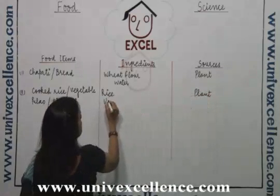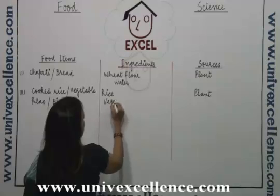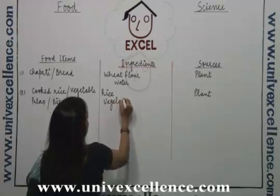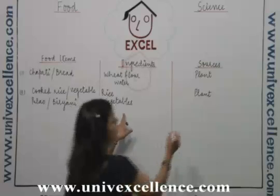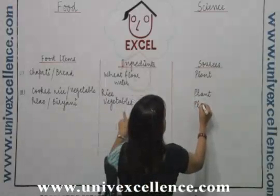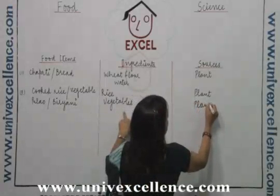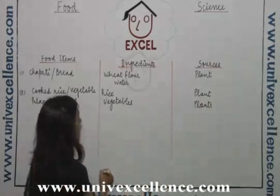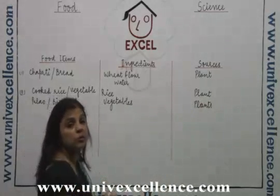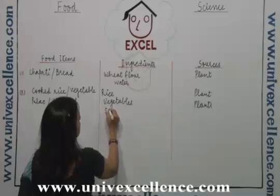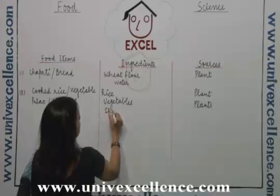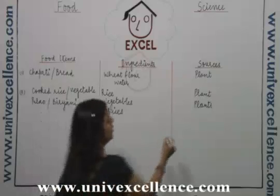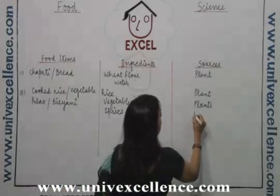Then, vegetables — again, we get vegetables from plants. And then we have to use spices. Spices we also get from plants.